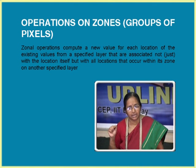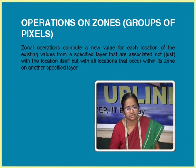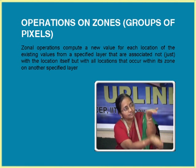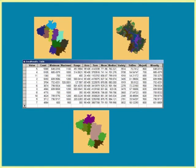Zonal operations compute a new value for each location based on existing values from a specified layer, associated not only with that location itself but with all locations within its zone. So it is not local — it is zone versus theme. Whether you put rainfall, elevation, or any attribute as the thematic map, it gets quantified and stored in a table for every zone. You can pull anything from that table and make a map or use it for any computation. That is the concept of zonal operation.